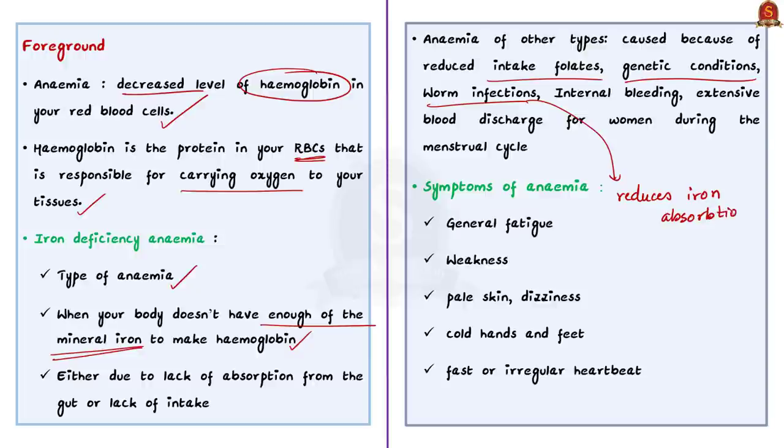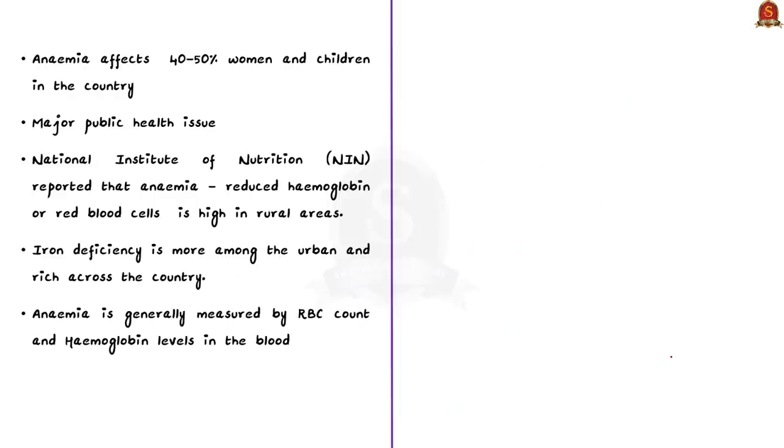Now, coming back to iron deficiency anemia. The symptoms of iron deficiency anemia are general fatigue, weakness, pale skin, dizziness, cold hands and feet, and fast or irregular heartbeat. These are the symptoms of iron deficiency anemia. With that information, let us look into the findings of the article.